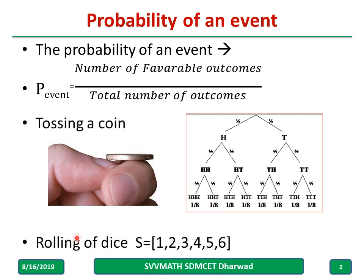Rolling a dice: the sample space is one, two, three, up to six and all are equiprobable. The probability of getting four when I throw a dice is one by six.